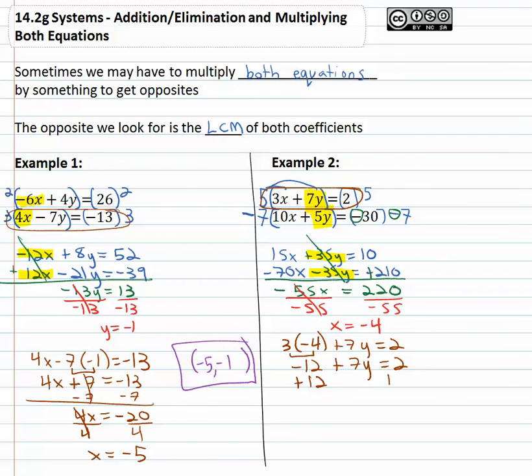Adding twelve to both sides, 7y equals 14. Dividing by seven, y is equal to 2.